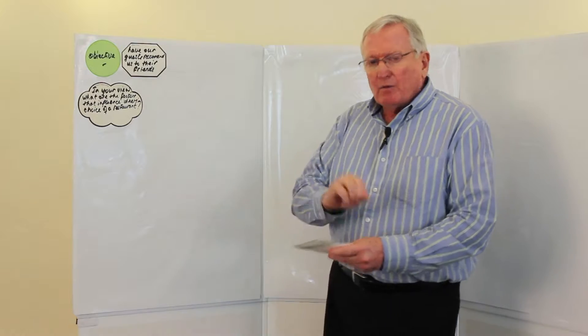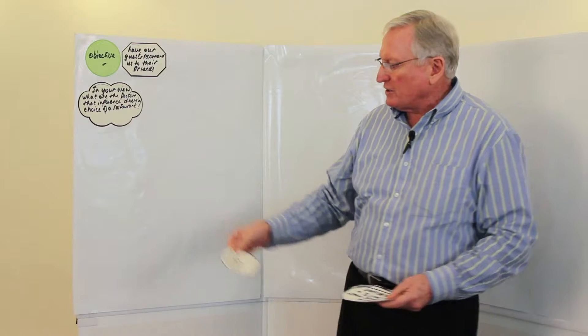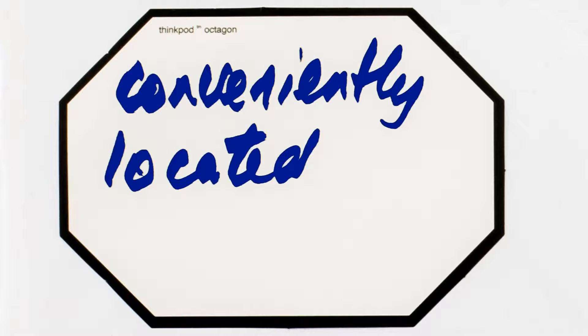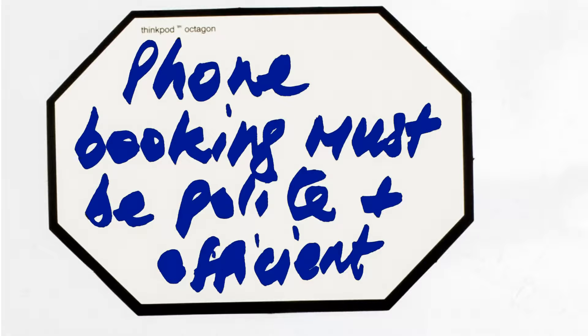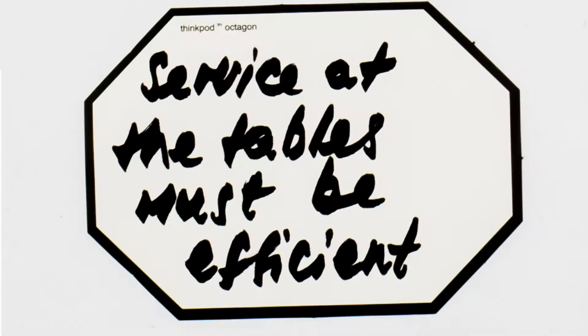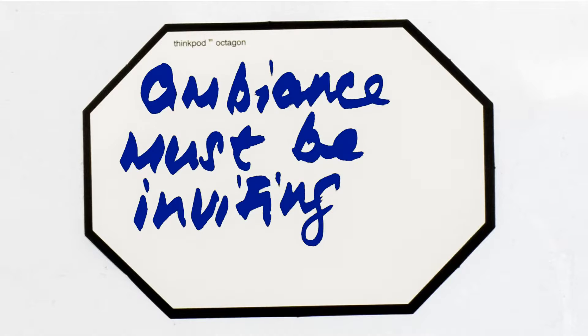And they will each have written cards. And I now have, as the facilitator in this instance, all of the cards in front of me. And it would be: the restaurant's conveniently located, phone bookings must be polite and efficient, the food must represent value for money, service at the tables must be efficient, the ambiance must be inviting, food must be served at the right temperature.